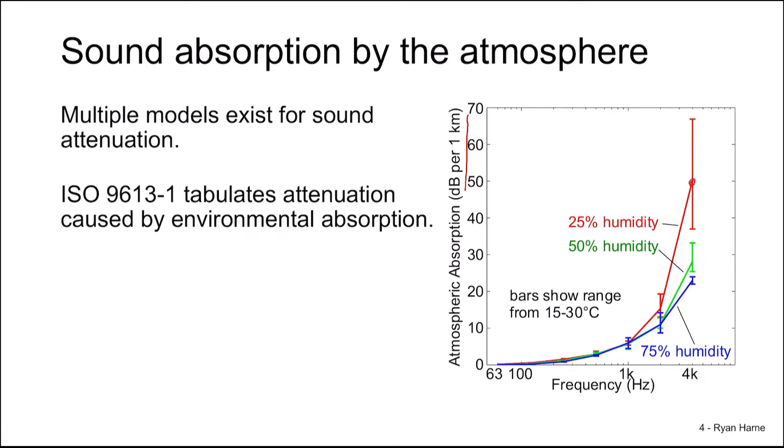25% humidity leads to, on the mean, around 50 dB per km. So that sounds like a lot. But let's take one number into account. And that's 66. 66 dB. When sound travels one kilometer, there's 66 dB.